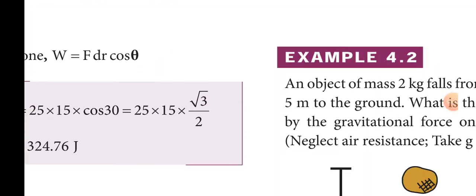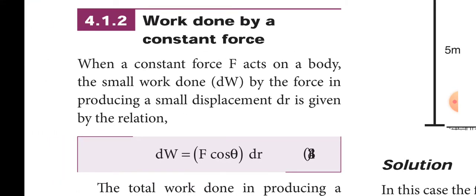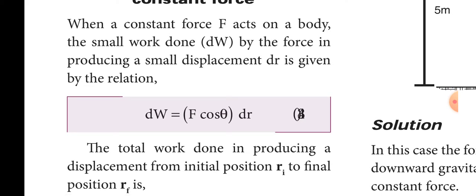Work done by a constant force: when a constant force F acts on a body, a small work done dW by the force is produced in a small displacement dr. We know the equation: dW = F·cosθ·dr, where dr represents the displacement of the body. Finding the limit interval from initial position r_i to final position r_f, we get the equation W = F·cosθ·(r_f − r_i). This is work done by a constant force.